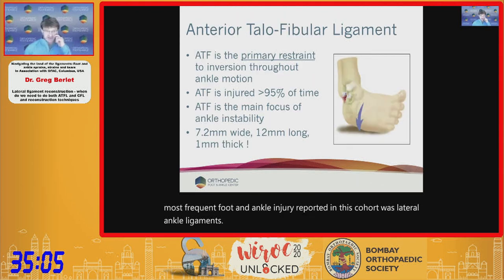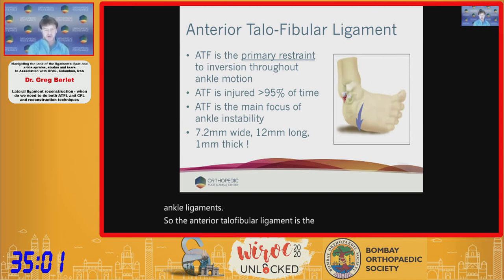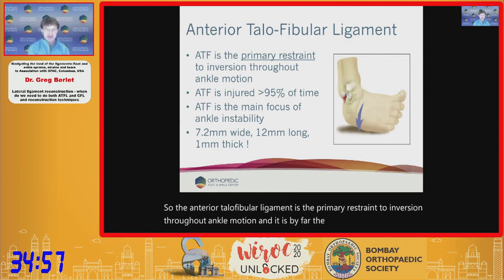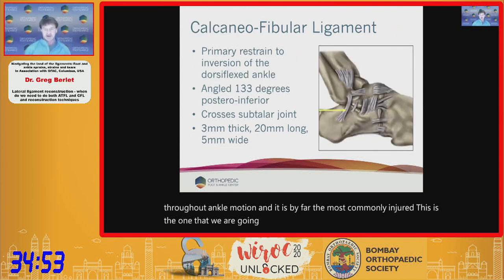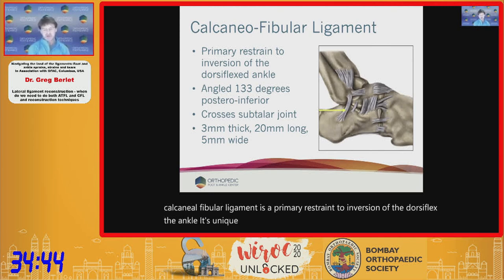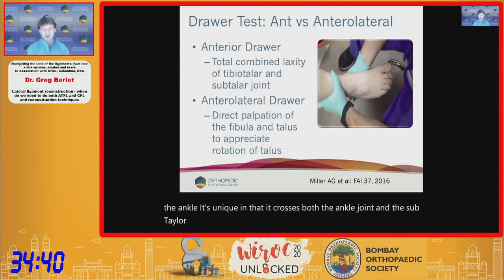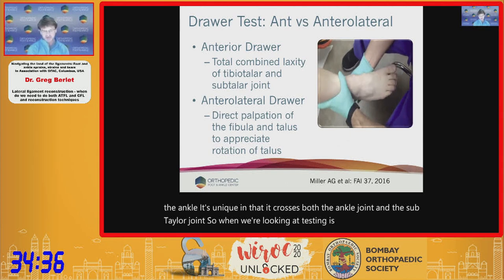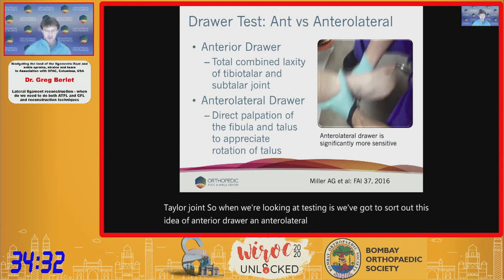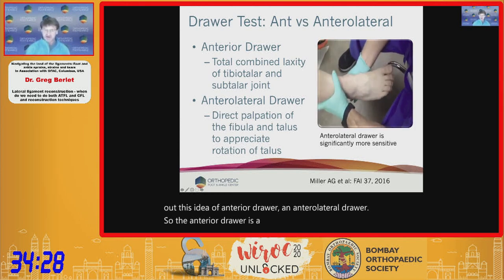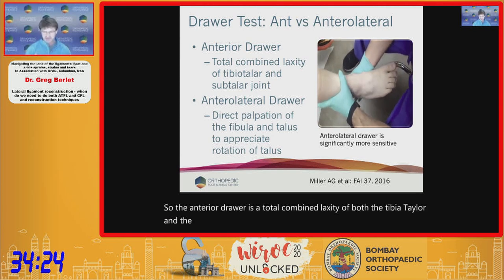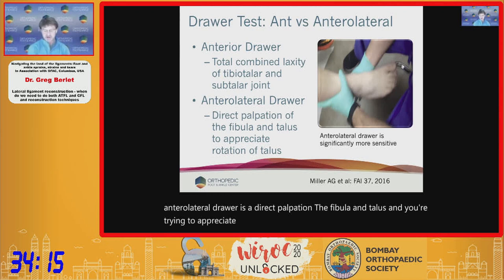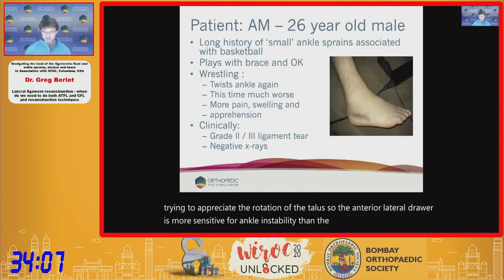The anterior talofibular ligament is the primary restraint to inversion throughout ankle motion and is by far the most commonly injured. The calcaneofibular ligament is the primary restraint to inversion of the dorsiflexed ankle and uniquely crosses both the ankle joint and the subtalar joint. For testing, we must distinguish the anterior drawer — combined laxity of tibiotalor and subtalar joints — from the anterolateral drawer, which assesses rotation of the talus and is more sensitive for ankle instability.